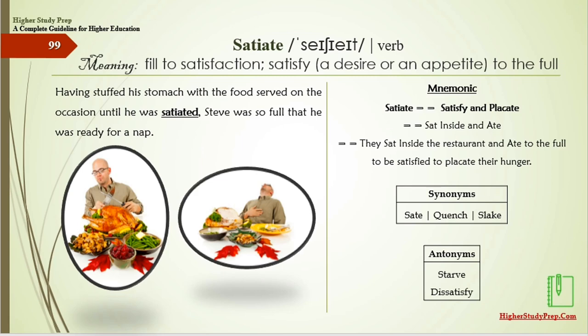Satiate means to satisfy a desire to the full. Having stuffed his stomach with the food served on the occasion until he was satiated, Steve was so full that he was ready for a nap. Mnemonic: satiate — satisfy and placate; they sat inside the restaurant and ate to the full, to placate their hunger. The synonyms of satiate are sate, quench, or slake, and the antonyms are starved or dissatisfied.